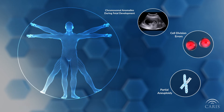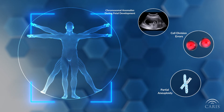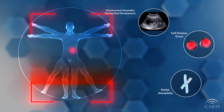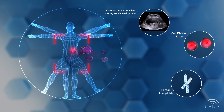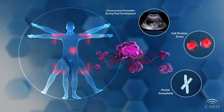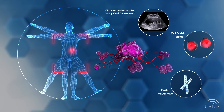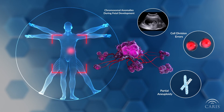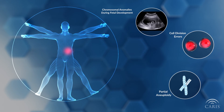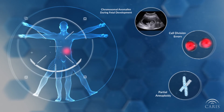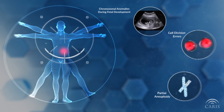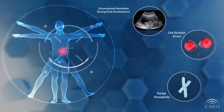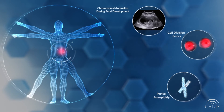Aneuploidy is a type of genomic instability that is one of the hallmarks of cancer. The degree of aneuploidy in tumor cells can be used to predict cancer progression and outcomes. It can also be used to direct the treatment of certain cancer types with the potential for targeted therapy.